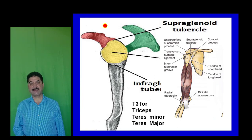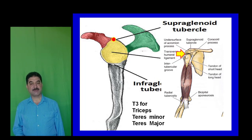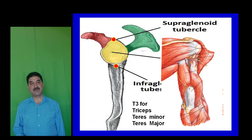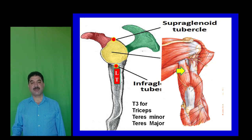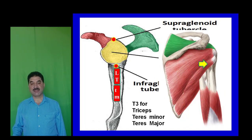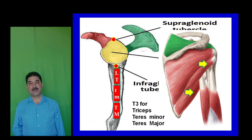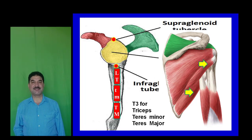The lateral border of the scapula is thickened. Above the glenoid cavity is a tubercle called the supraglenoid tubercle, which gives attachment to the long head of biceps. Below the glenoid cavity is the infraglenoid tubercle, from which originates the long head of triceps. The lateral border also gives attachment to teres minor and teres major muscles from above downwards. Remember: teres minor rests on the shoulders of teres major.